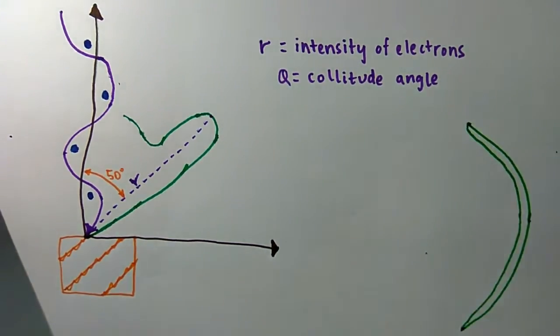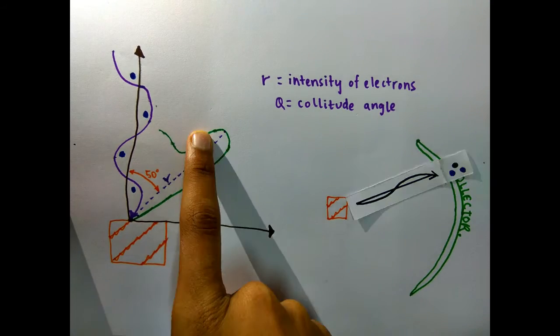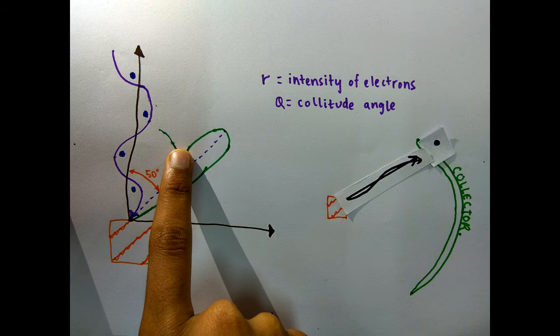Well, you're not the only smarty pants around here. If electrons were behaving like a particle, it would have been equally distributed across the collector.